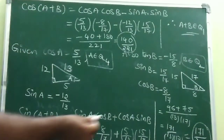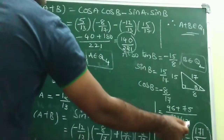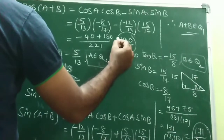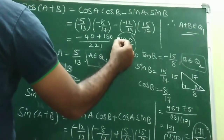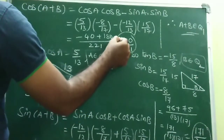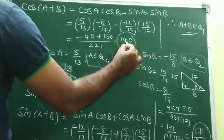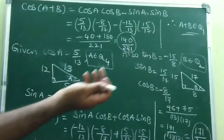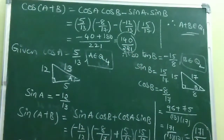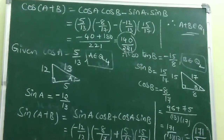For example, if we had gotten cos(A+B) = -140/221, then sine positive and cos negative would place A+B in the second quadrant. Hence in that case, A+B would lie in Q2.